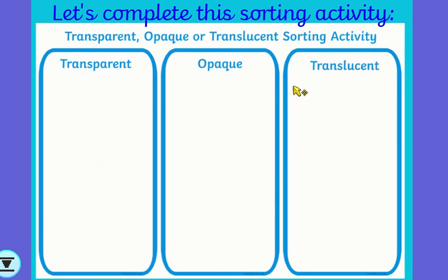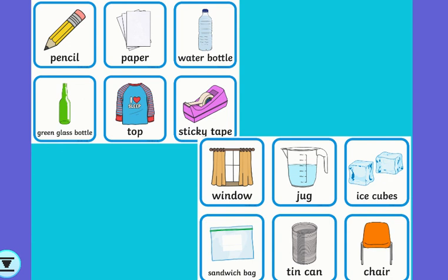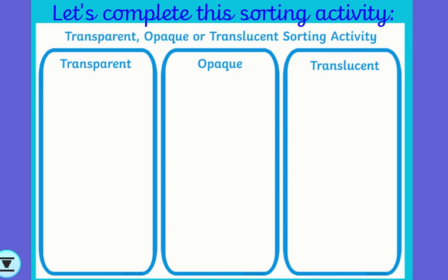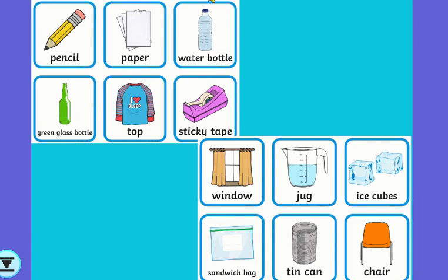Okay, so I'm now going to ask you to complete this sorting activity. You can either just write the names of the things in the boxes, or if you want to cut and stick them you can — it is entirely up to you. Here are 12 things, and I'd like you to decide which category each one goes into: is it transparent, is it opaque, or is it translucent? Pause the video and off you go. If you've completed it correctly, you should have four in each of the sections — four in transparent, four in translucent, and four in opaque.